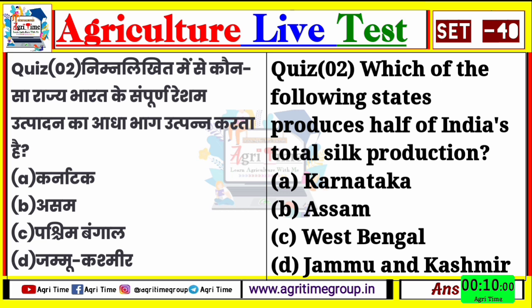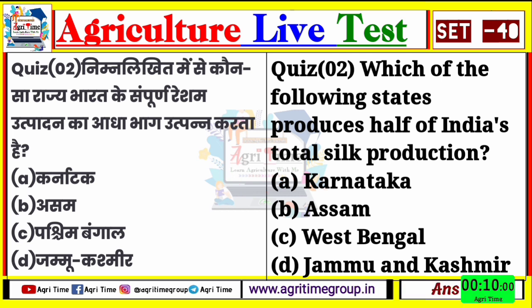Quiz two का जिनों ने भी A comment किया है, उनका answer right है। कर्नाटक राज्य है जो कि भारत के संपूर्ण रेशम उत्पादन का आधा भाग उत्पन्न करता है। Right answer quiz two के लिए A होगा।